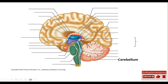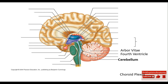This right here is the cerebellum. We can see the arbor vitae, which is the branching of the white matter. This is the fourth ventricle — we can see part of the fourth ventricle right here. And this is the choroid plexus, which is a collection of blood vessels. So we have seen the choroid plexus as part of the third ventricle, and the choroid plexus here as part of the fourth ventricle.